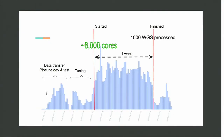You can see that between those two red lines is when we actually ran the thousand genomes. At the peak we had about 8,000 cores — that was the initial alignment step where we used lots of 16-core machines — and then subsequently we were doing steps where we were using a larger number of smaller machines. This is our utilization graph.